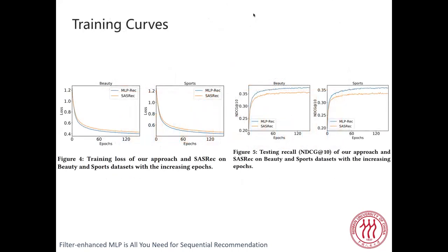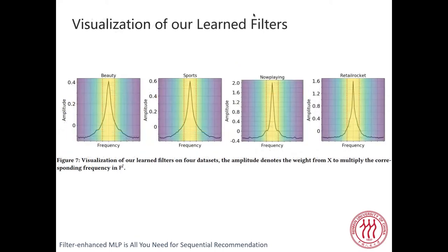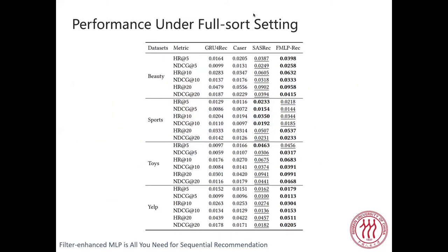The training curves of our model compared with SASRec show that as training progresses, our model's training loss converges better and test set performance is also better. For the visualization of our learned filters, the yellow part denotes the low-frequency zone and the purple part denotes the high-frequency zone. Our proposed model always assigns high weight to low-frequency signals, indicating our learned filter behaves like a low-pass filter. We also compare our model with other methods under full-sort settings, and our model outperforms all models in most settings.